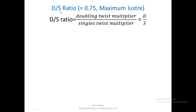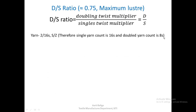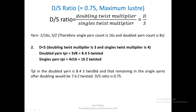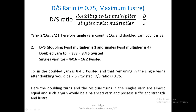In Case 2, D is less than S: doubling twist multiplier is 3 and singles twist multiplier remains 4. Doubled yarn TPI = 3 × √8 = 8.4 S-twisted; singles TPI = 4 × √16 = 16 Z-twisted. After doubling, 7.6 Z-twisted turns remain in the singles — when D/S ≈ 0.75, the doubling turns and the residual turns in the singles are almost equal. Such a yarn is a balanced yarn possessing sufficient strength and luster.